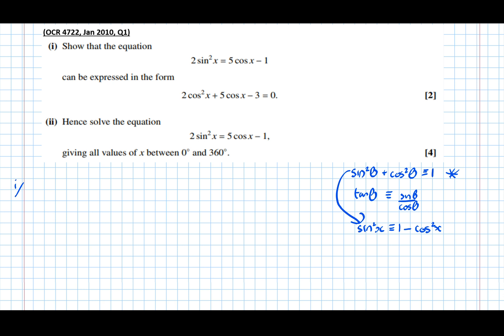So now replacing that, I get 2 times (1 minus cos squared x) equals 5 cos x minus 1. Then taking everything over the right hand side, I get 0 equals 2 cos squared x plus 5 cos x minus 3, which is what we're asked to show. We're asked to show that 2 cos squared x plus 5 cos x minus 3 equals 0.